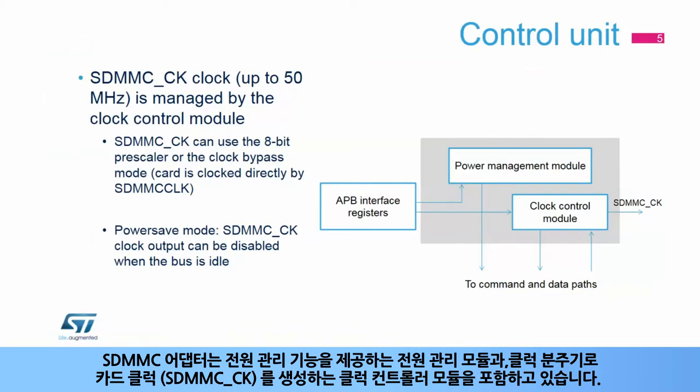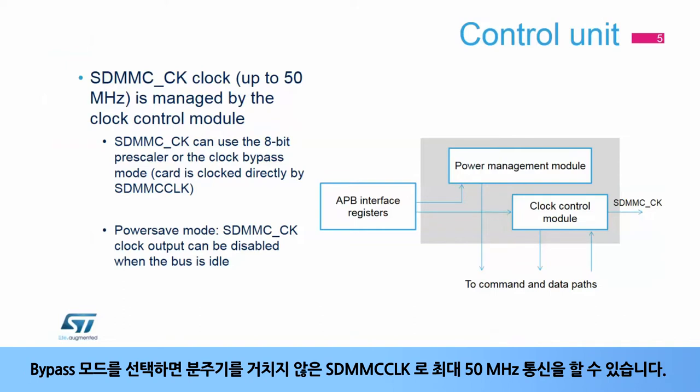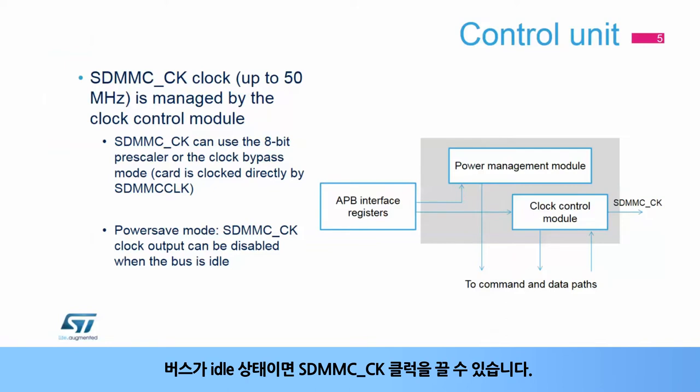The SDMMC adapter includes a control unit that contains a power management module and a clock control module with the clock divider for the card clock, SDMMC CK. The clock control module provides an 8-bit prescaler for SDMMC CK clock generation, which allows it to generate a clock equal to 1/2 SDMMC CLK. It also provides a bypass mode for communications up to 50 MHz. The control unit can disable SDMMC CK generation when the bus is idle.